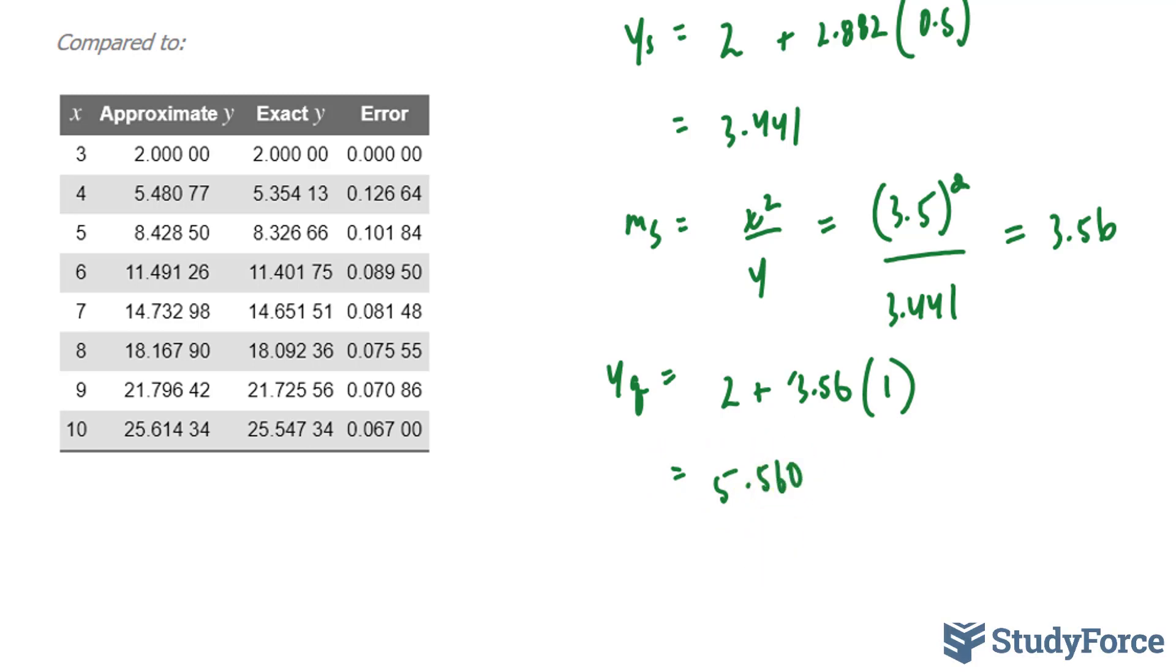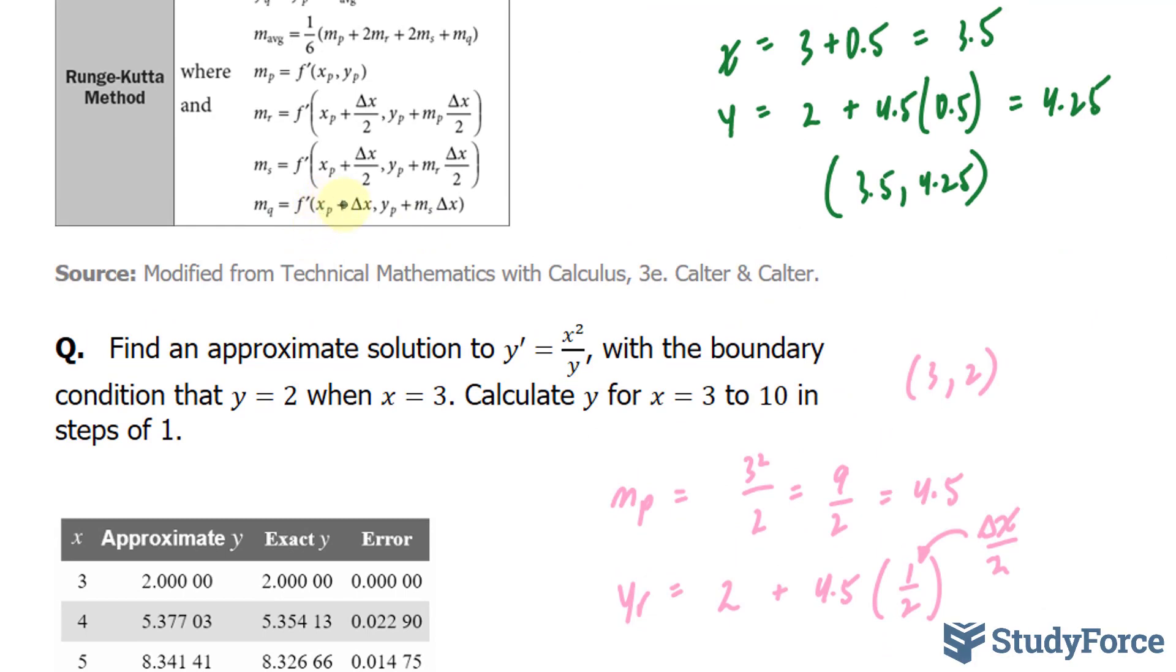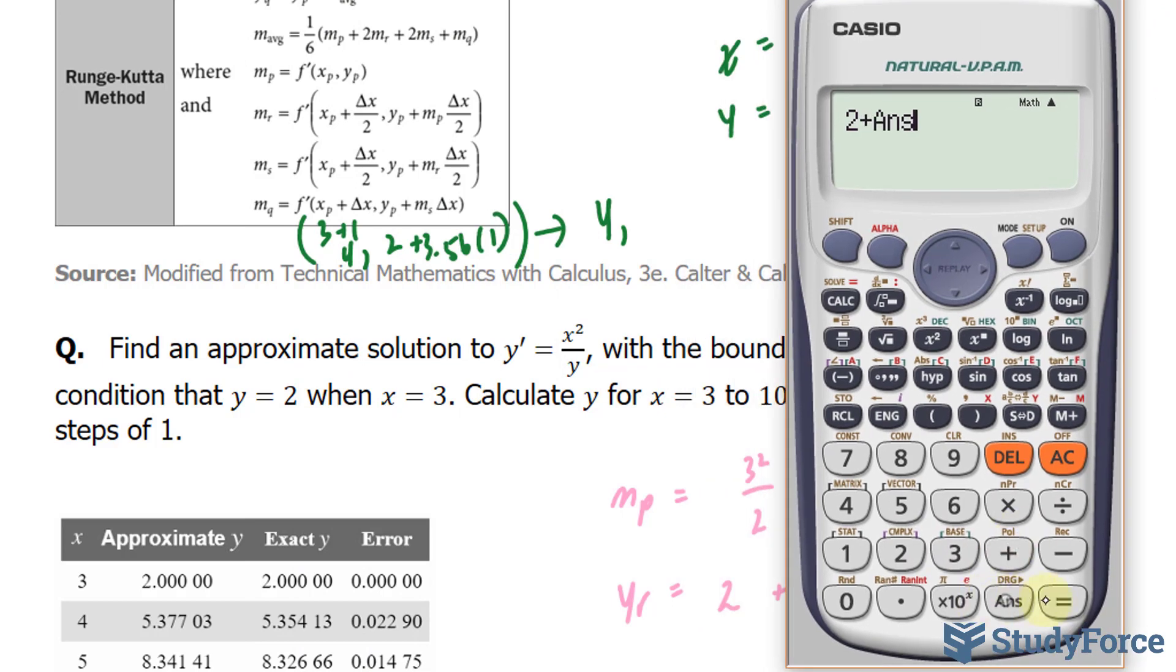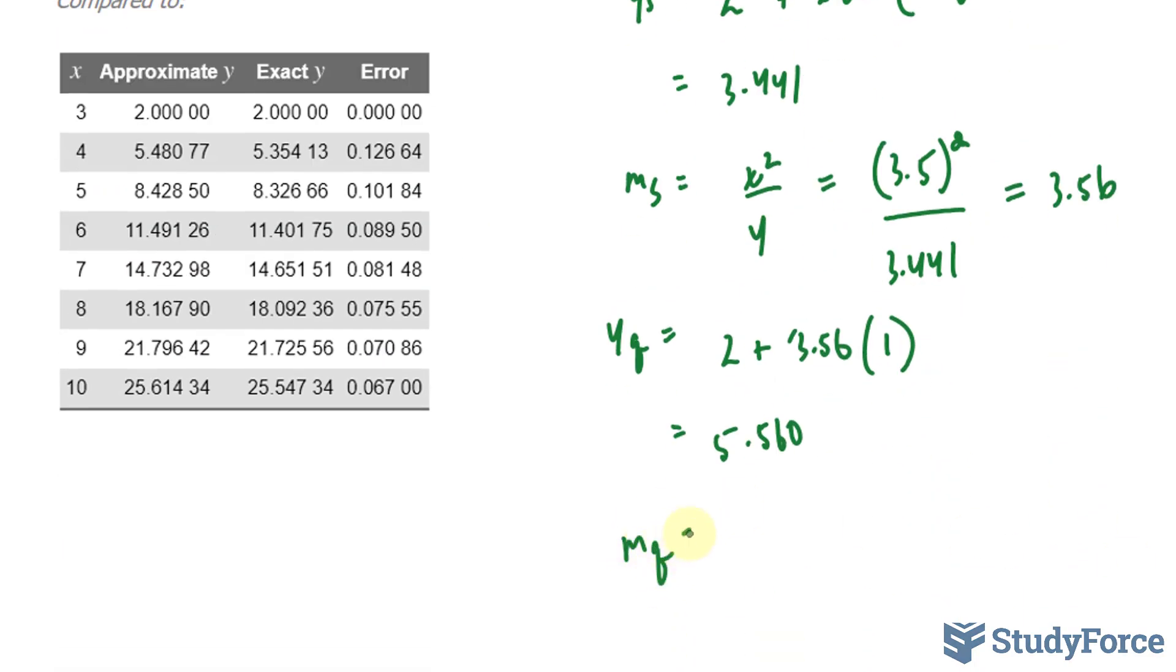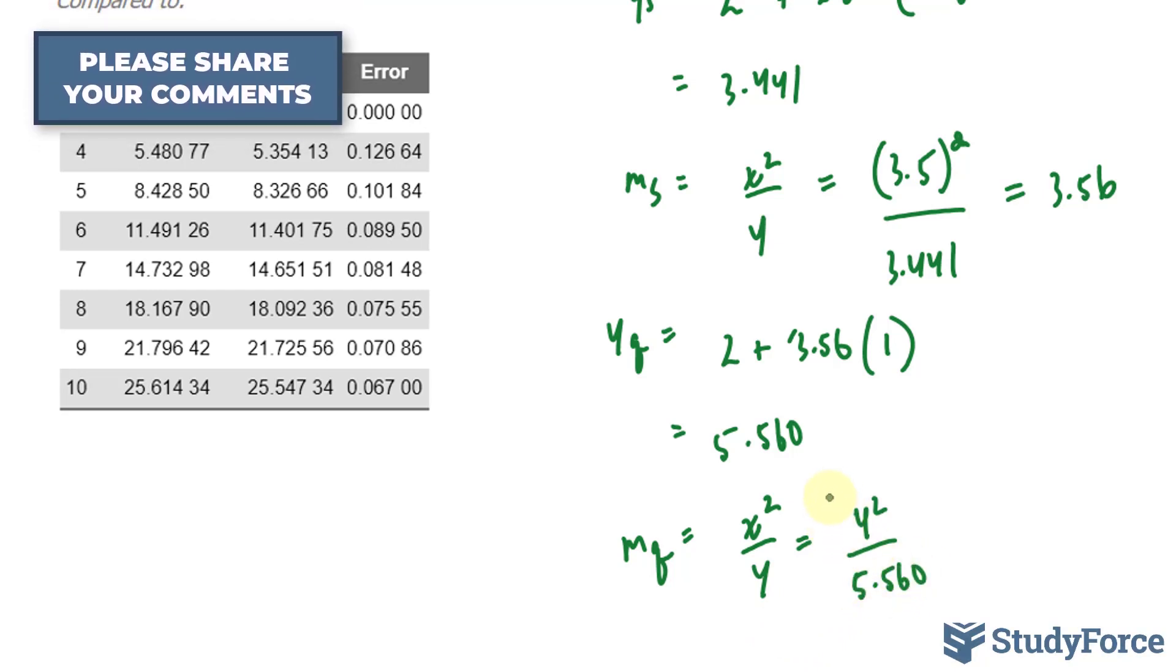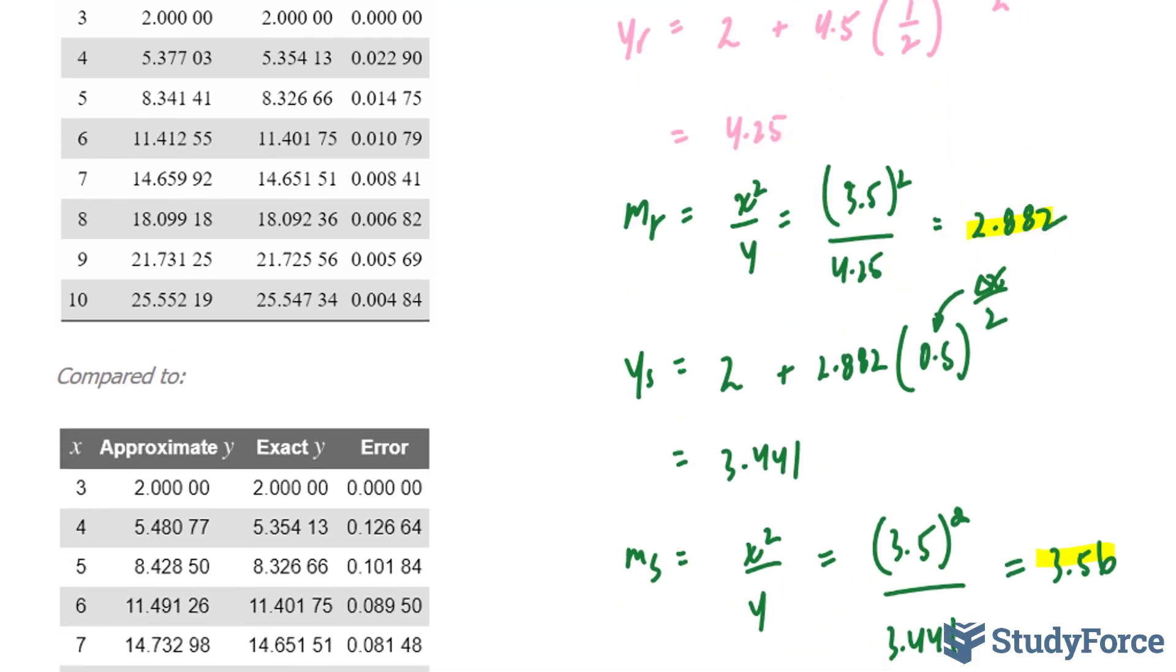Using 5.560, I can find out what m_q is equal to. The formula for m_q is right here, where you take your previous x. My previous x was 3 + 1, that's 4. And our previous y, which was 2, plus m_s, which I found previously to be 3.56 times 1. Therefore, we have 4 and, using my calculator, 5.56. Let's substitute that to get our slope m_q. x²/y = 4²/5.560. This should give you 2.878. Let me highlight all these slopes that I found.